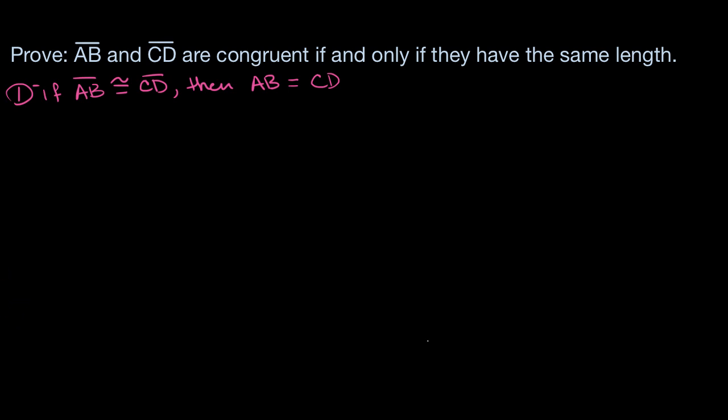Well, the first thing to realize is if AB is congruent to CD, then AB can be mapped onto CD with rigid transformations. That comes out of the definition of congruence.